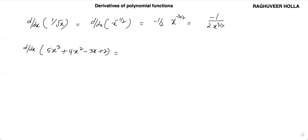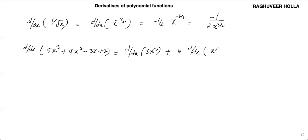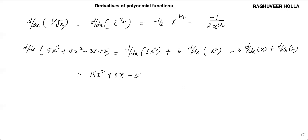Now let us look at another problem: d by dx of minus 5x cubed plus 4x squared minus 3x plus 2. This is minus 5 d by dx of x cubed, plus 4 d by dx of x squared, minus 3 d by dx of x, plus d by dx of constant. This will be 15x squared, then 4 into 2 which is 8x, then minus 3, and the constant term is 0.